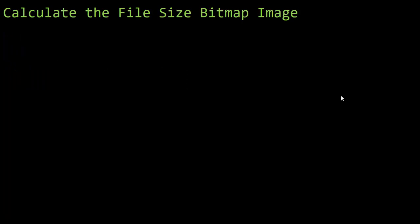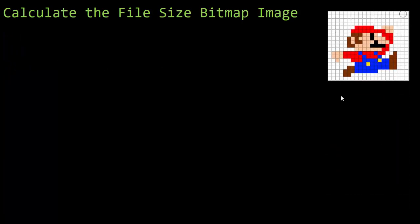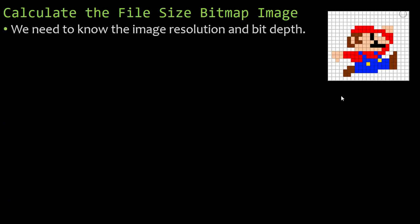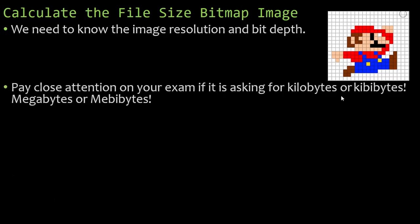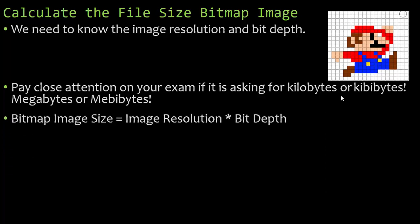Let's calculate the file size for a bitmap image. We're going to use this picture of Mario and we need to know the image resolution and bit depth before we can calculate the file size. Pay close attention on your exam — if it's asking for kilobytes or kibibytes, megabytes or mebibytes, you have to be able to convert properly. The formula for a bitmap image size: you take the image resolution and multiply it by the bit depth. Then you break it down into bytes and then into kibibytes or mebibytes as far as you need to.